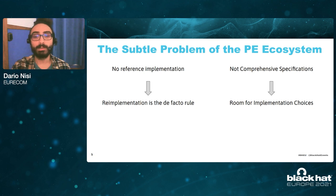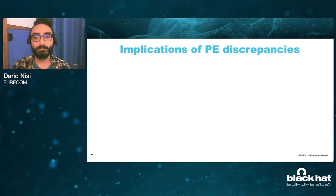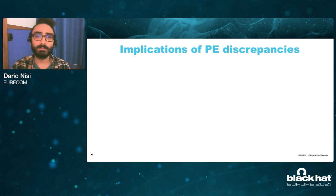When you combine these two things together, you end up with discrepancies, which are slight differences in how two pieces of software handle the same file given as an input. But are these discrepancies really a problem? Let's try to make a case for the severity of this problem by means of two examples.